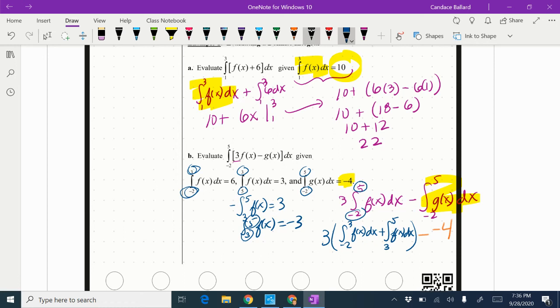Now I'm going to substitute those values in. So I know that, let me find a color I haven't used yet. I know that from negative two to three is 6.